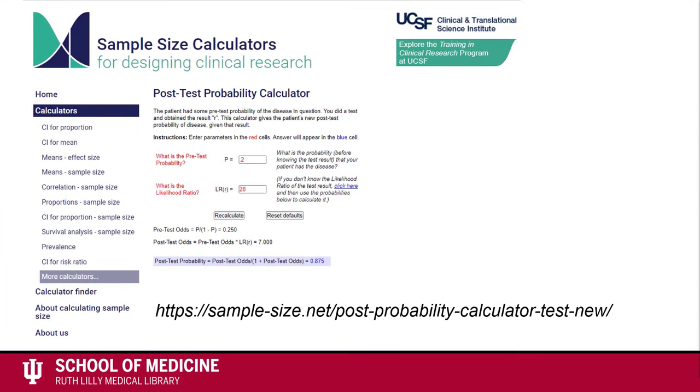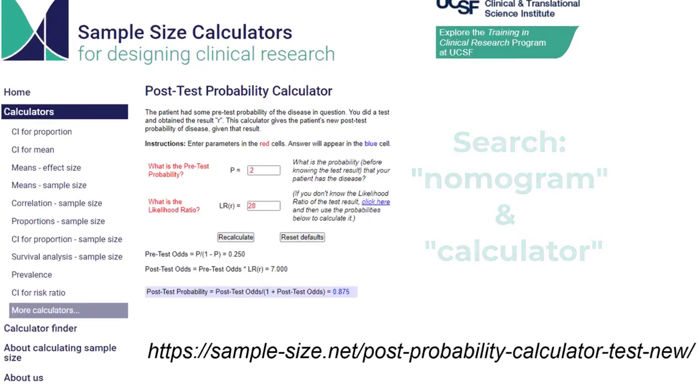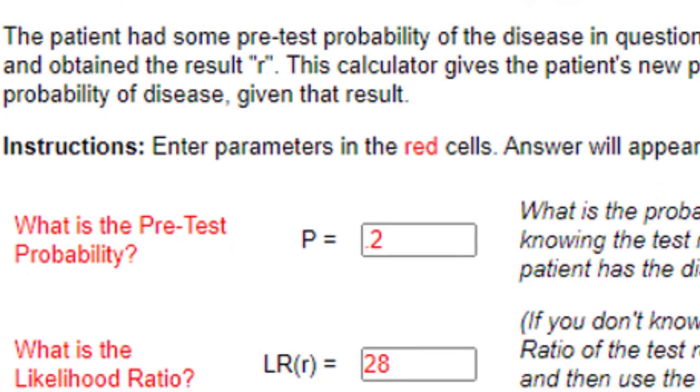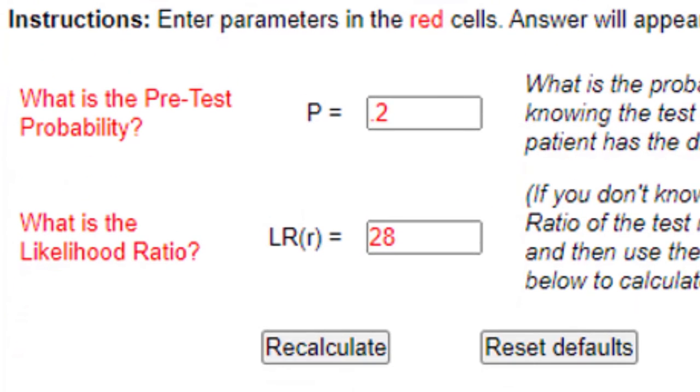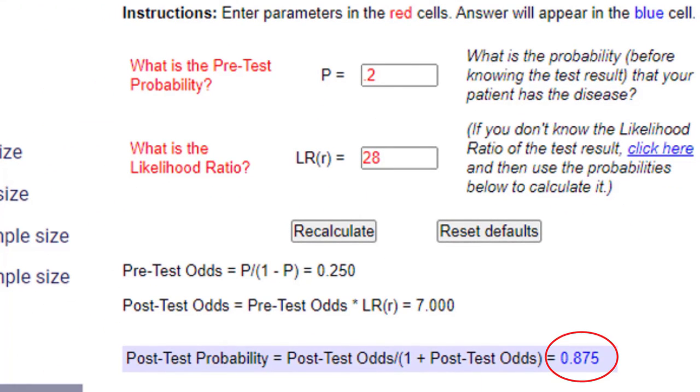It is important to understand how nomograms work, but in the future, you likely won't need to graph them on paper. There are many sources for nomogram software if you search terms like nomogram and calculator. In this calculator I found, I plugged in 0.2 for 20% for pre-test probability. For likelihood ratio, I plugged in 28. I then clicked on the Recalculate button and found the post-test probability to be 0.875.